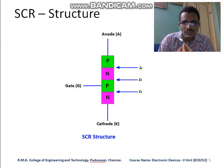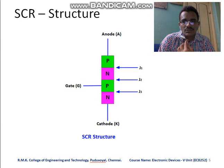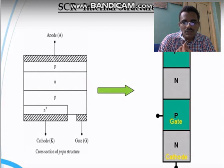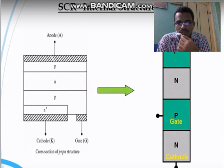The gate terminal is connected very near to the cathode. So we have three terminals: anode, cathode, and gate. Looking at the SCR internal structure, we have P-N-P-N layers. The cathode-connected N-type is heavily doped, while the anode-connected P-type is lightly doped compared to the other N-type material. This is the cross-section of the PNPN structure of the Silicon Control Rectifier.